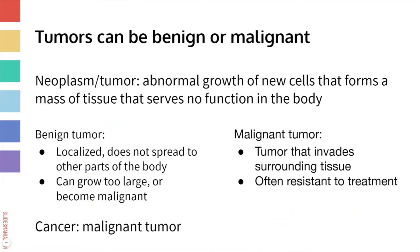Before we start, I just want to make a quick distinction about the difference between cancer and a tumor. A tumor is an abnormal growth of cells that forms a mass of tissue in the body that's not serving a function. We can think of two main categories of tumor: benign and malignant tumors.